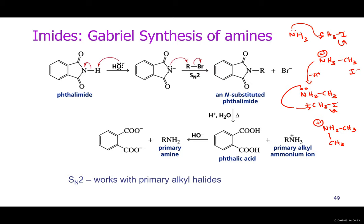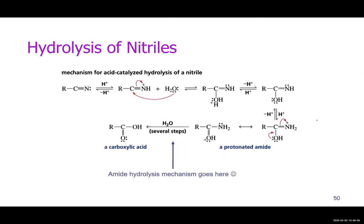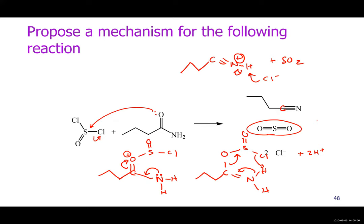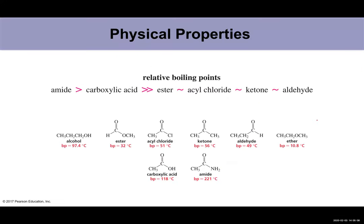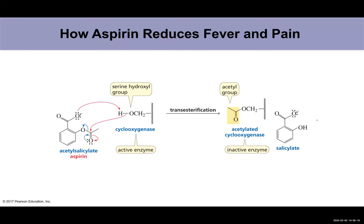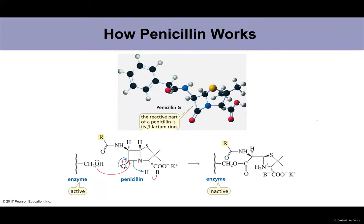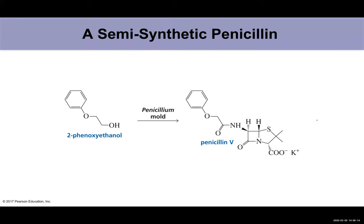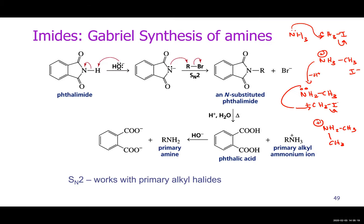Under acidic hydrolysis conditions, the nitrogen gets protonated, stopping further reaction. After neutralization you end up with a primary amine. This is called exhaustive methylation for the multiple alkylation case. Gabriel synthesis is an important reaction — it's one you need to know.